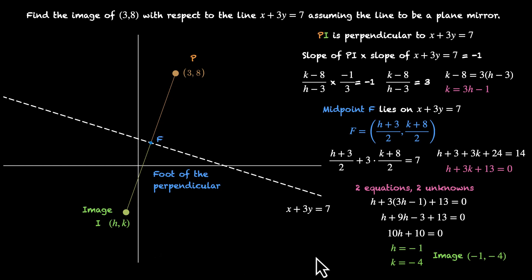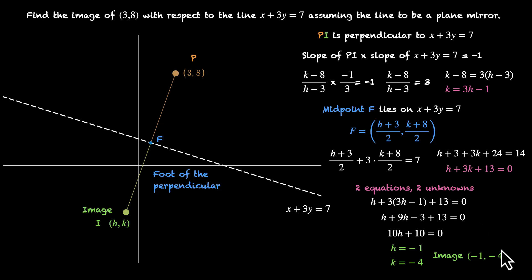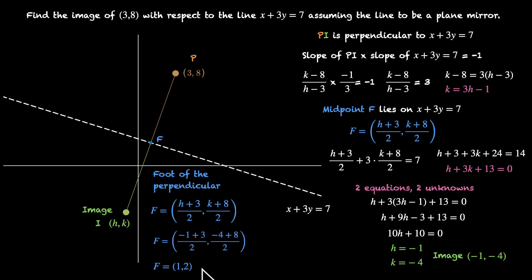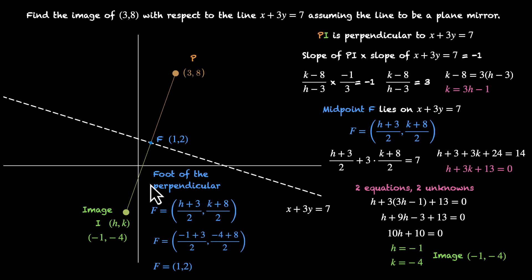We have the image. We can also figure out the foot of the perpendicular — that's the midpoint of (minus 1, minus 4) and (3, 8). The x-coordinate is (3 minus 1) by 2, which is 1. The y-coordinate is (8 minus 4) by 2, which is 2. So the foot of the perpendicular is (1, 2). We now have both the image and the foot of the perpendicular — this is how we find them given a point and the equation of a mirror.